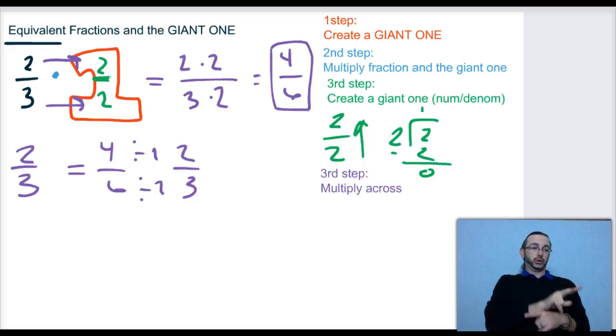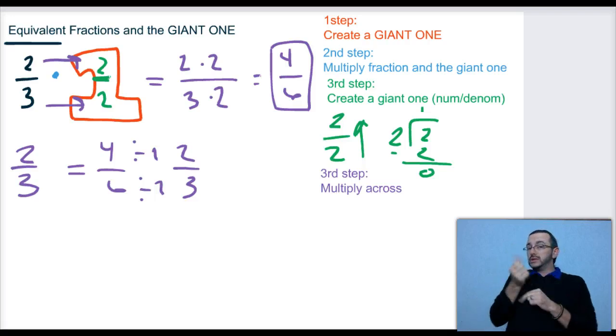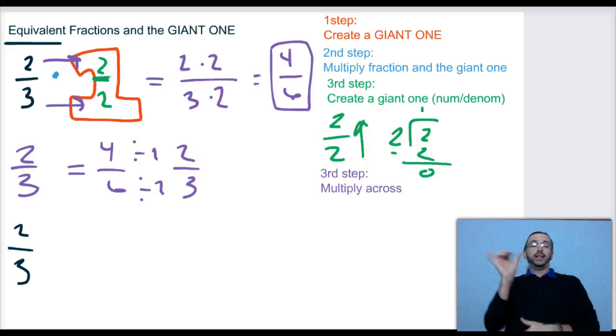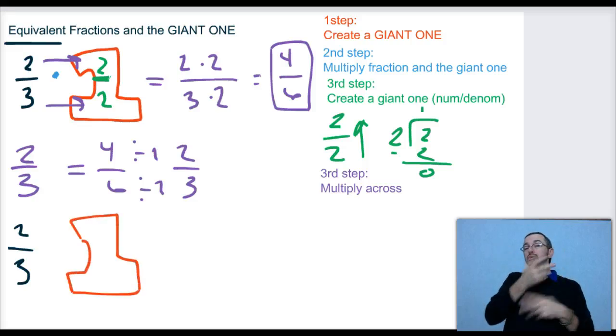Now remember, you could use any giant one to prove this. So if I'm just going to follow those step-by-steps again, and I look at 2/3, and this time I'm going to draw my giant one. I'm going to multiply these two things together.